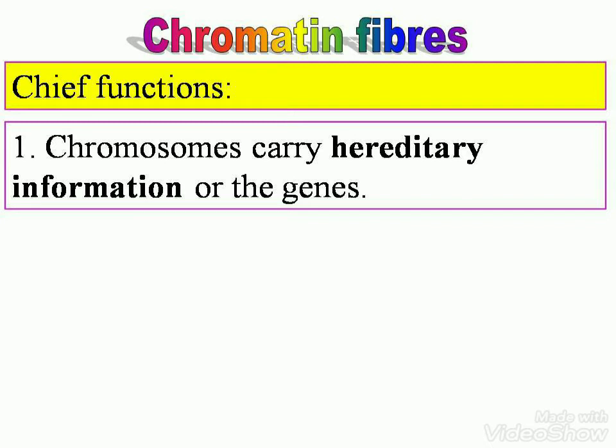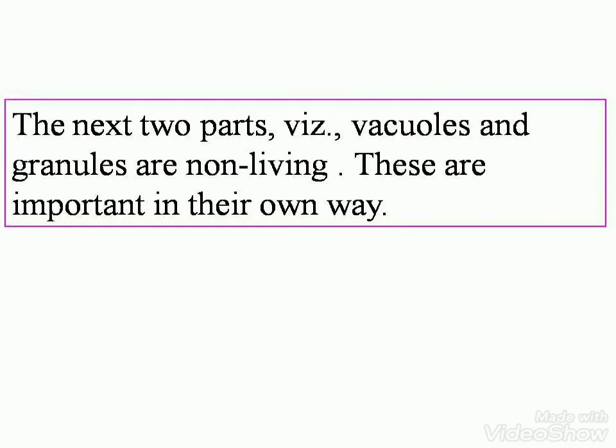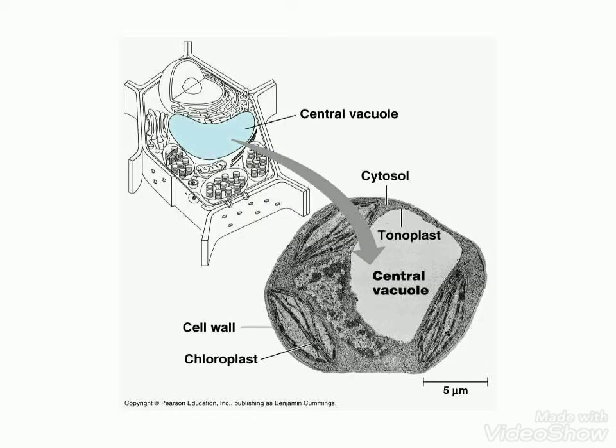The next two parts — vacuoles and granules — are non-living. These are important in their own way. Up to now we learned about the living parts of the cell; the next two are non-living parts, but they are also important. You can see the cell here; the central vacuole is enlarged. In the central vacuole you can see cytosol, tonoplast, cell wall, chloroplast, and the thickness is about 5 micrometers.